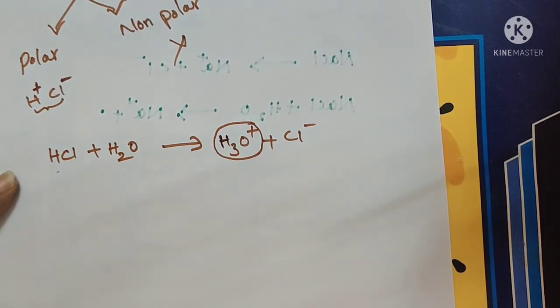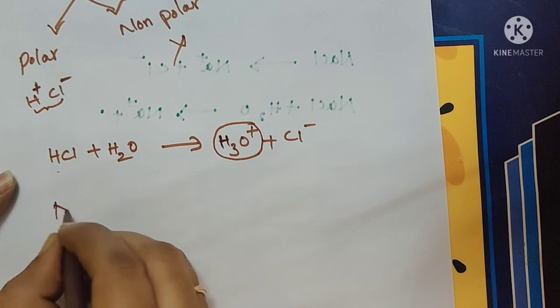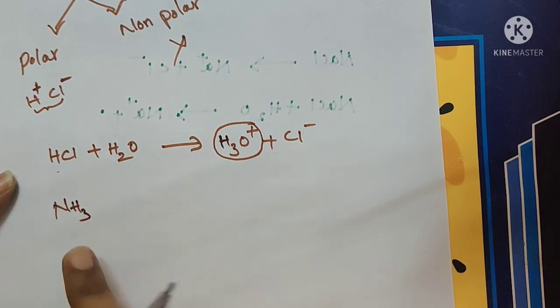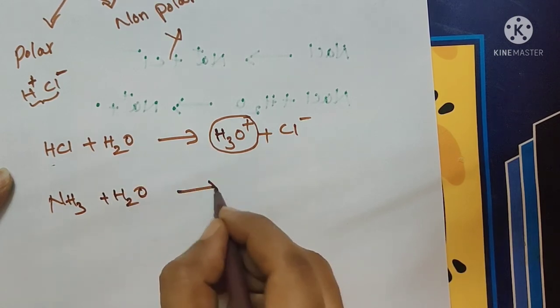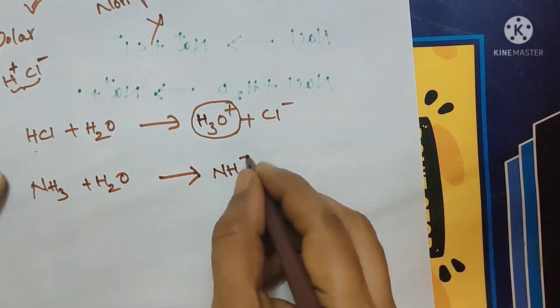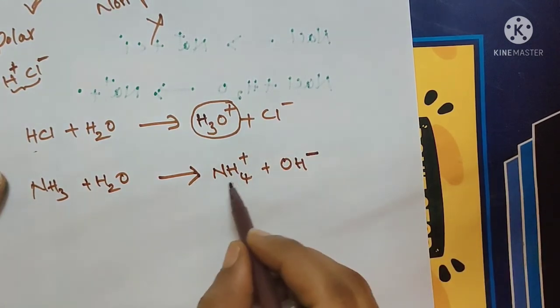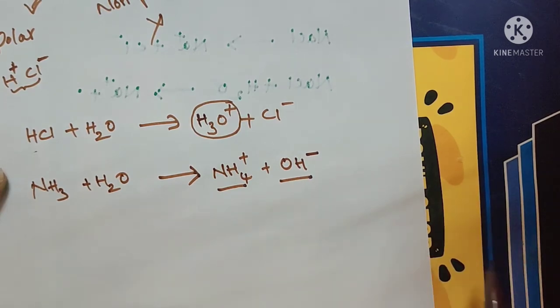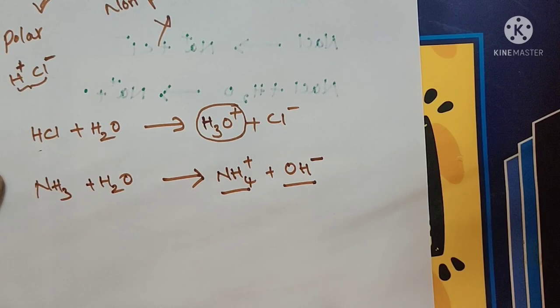Let us see another example for the ionization: NH3. This is the polar covalent compound. When it dissolves in water, what is the product? NH4 plus OH minus. Here also, two new ions are formed. This is about ionization.